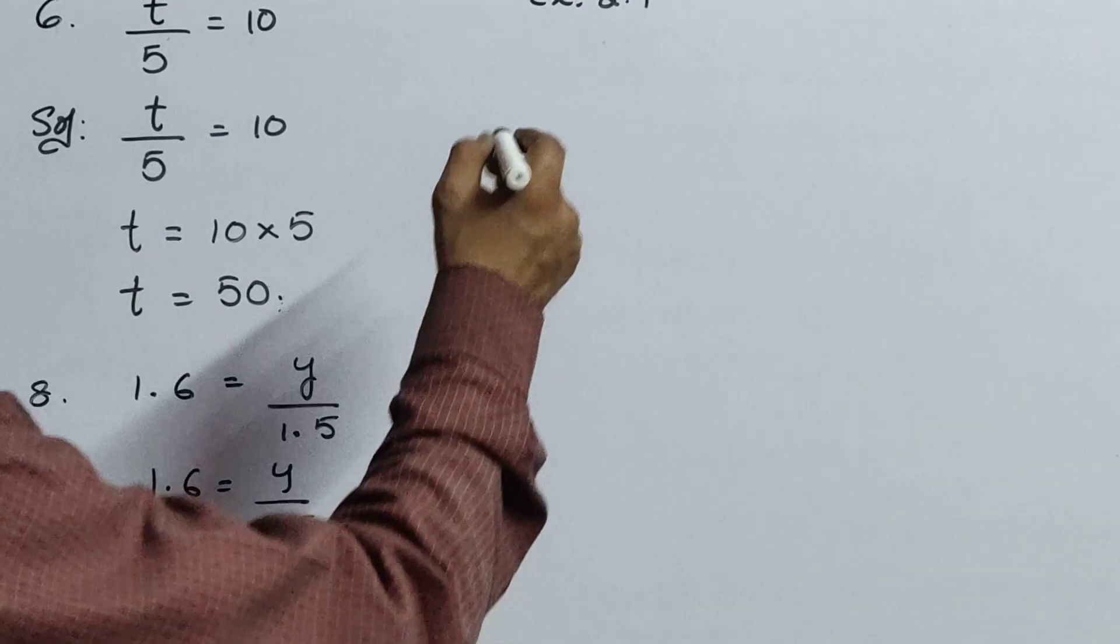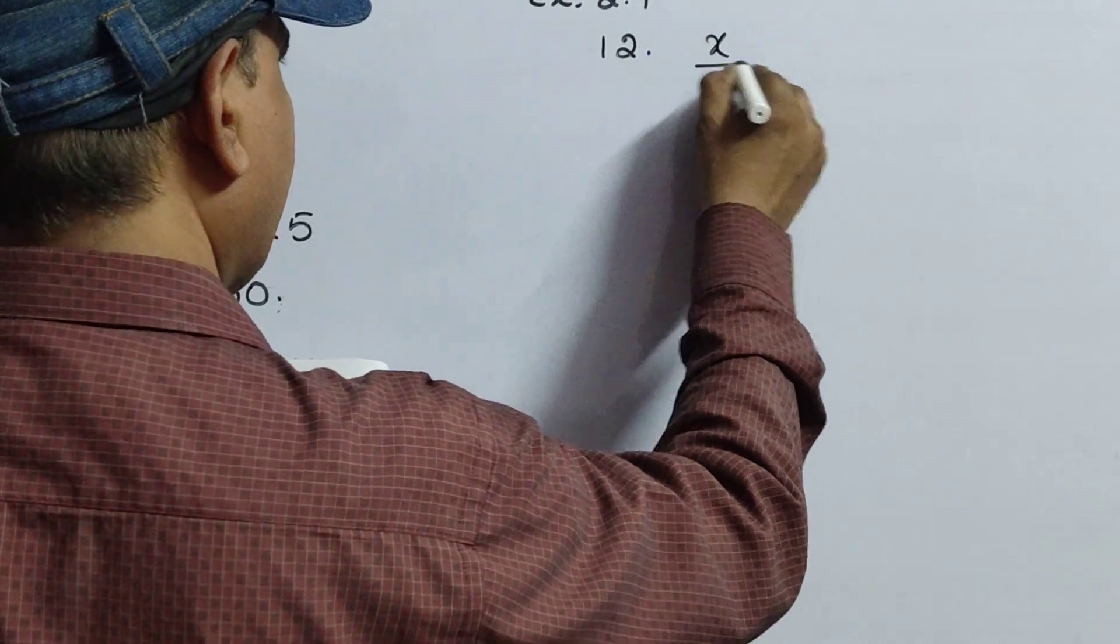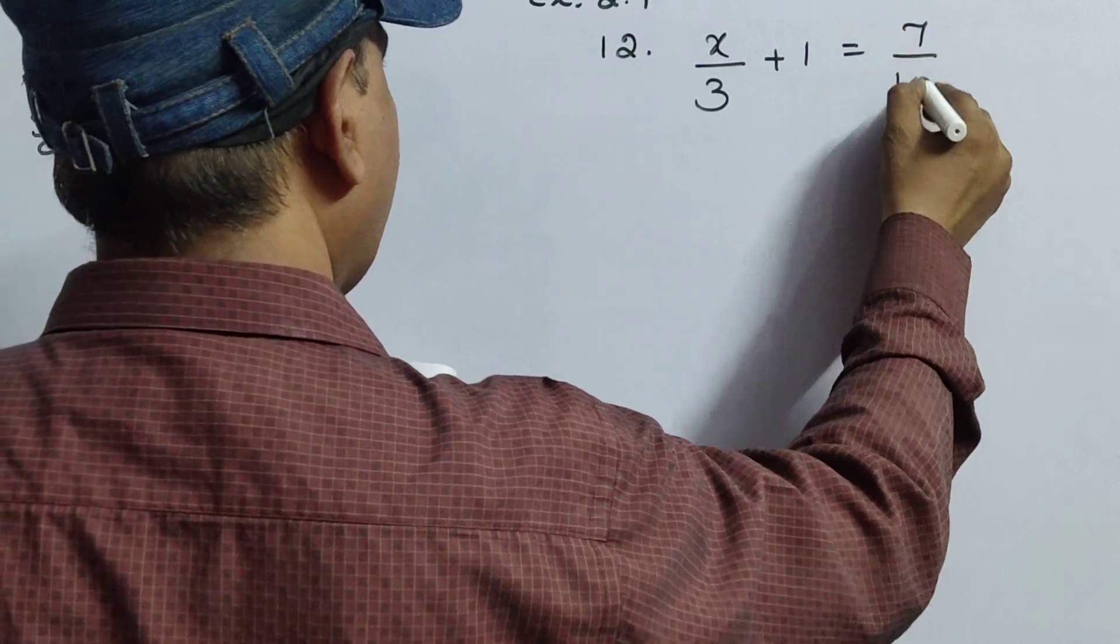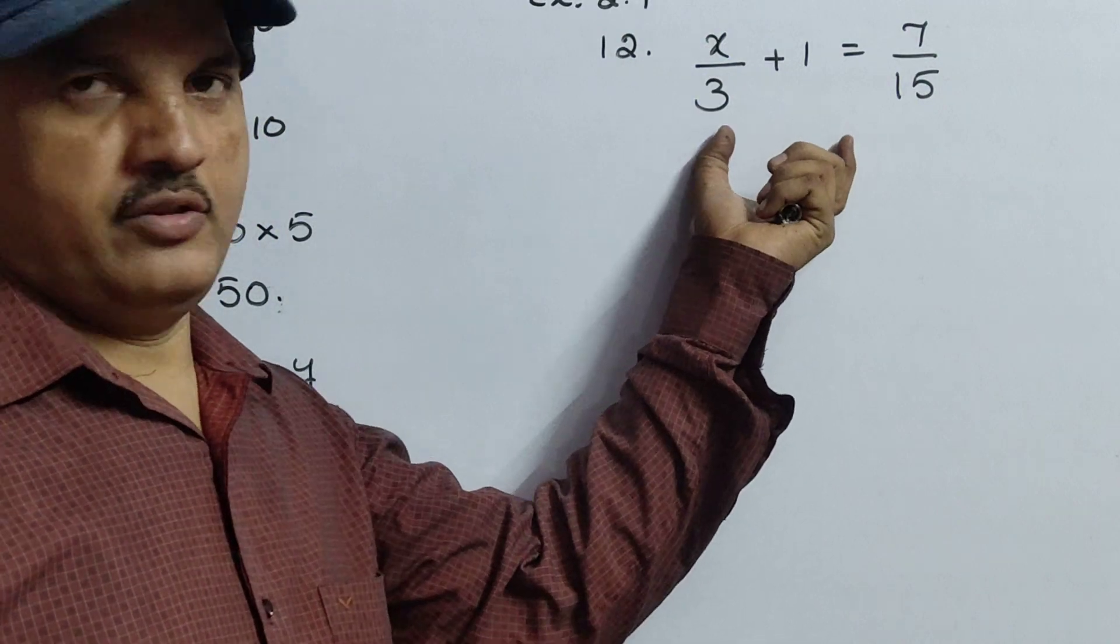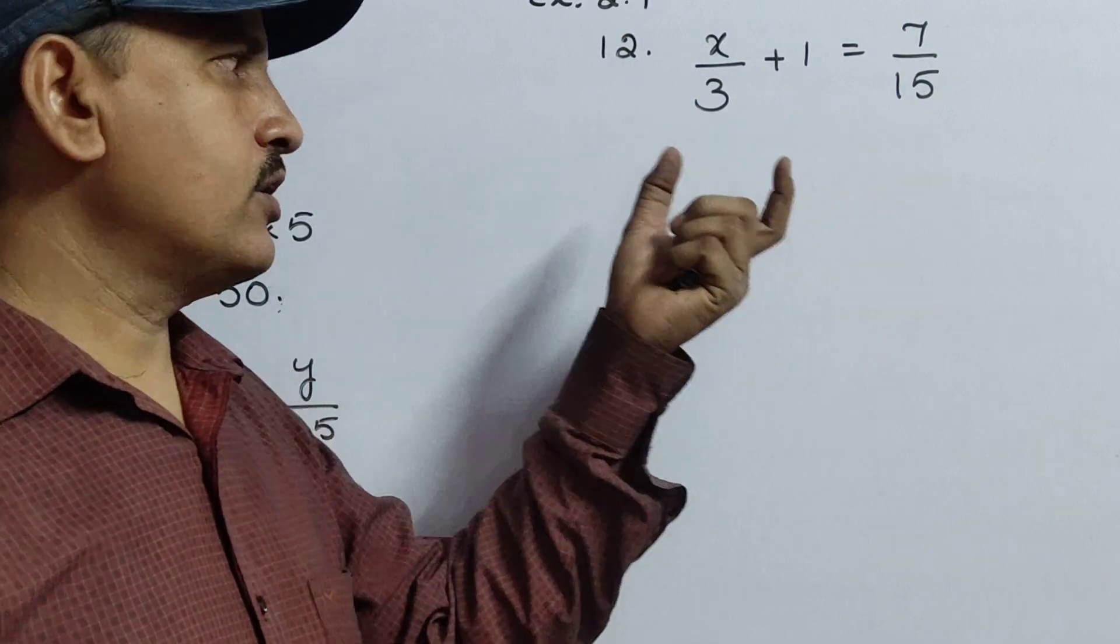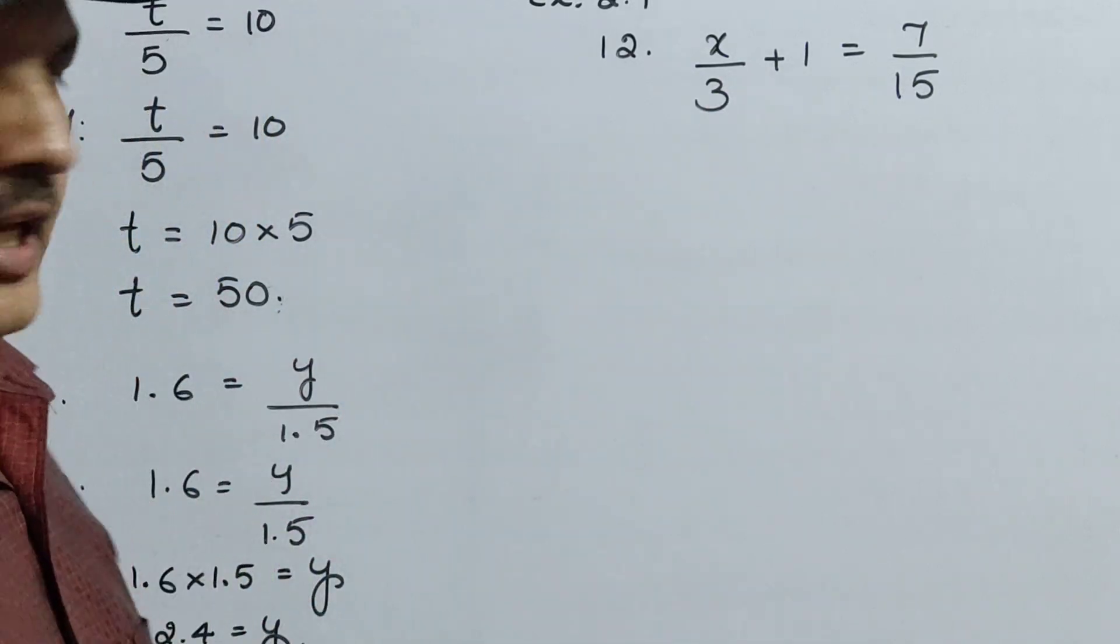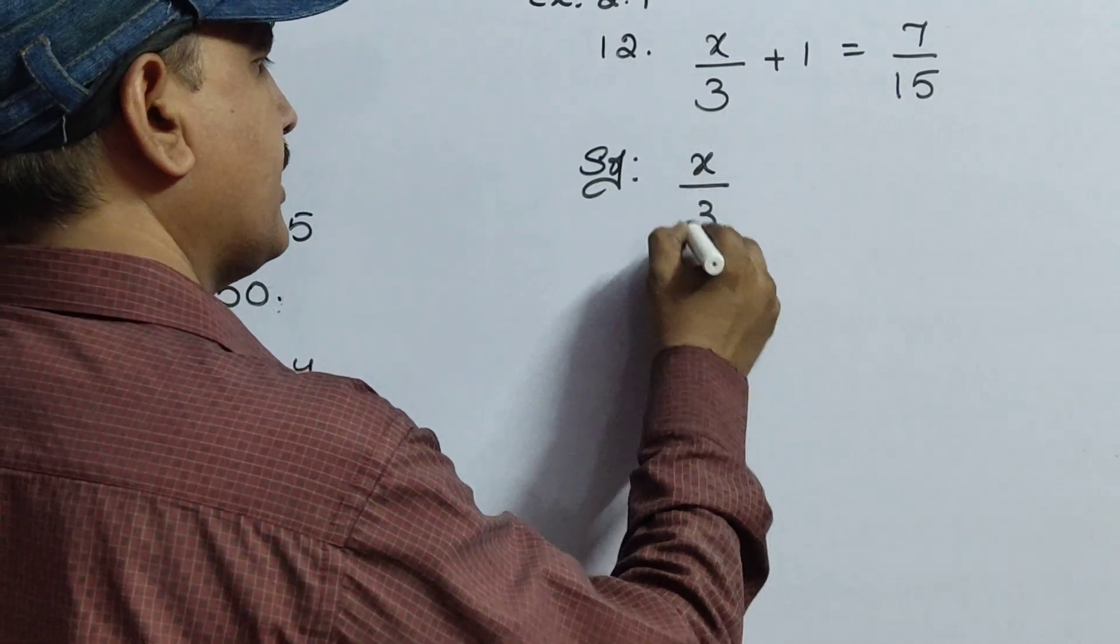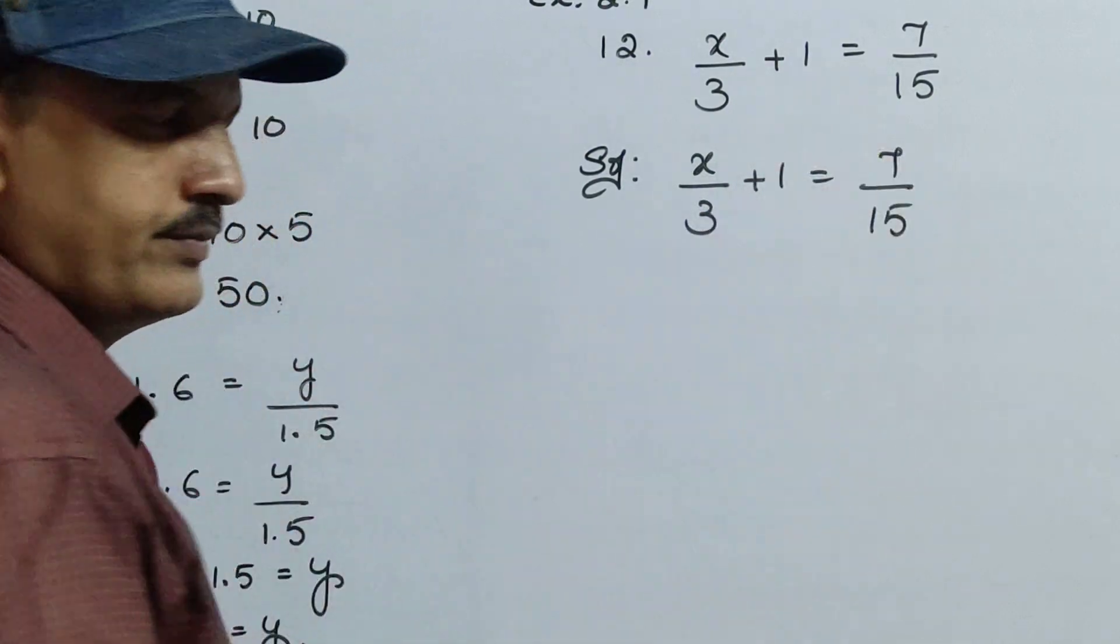Next sum, that is 12th sum. X by 3 plus 1 equals to 7 by 15. You should be very particular about writing the question. Because while seeing one number and writing another number, you know what is going to happen, like your marks. So write here: x by 3 plus 1 equals to 7 by 15.